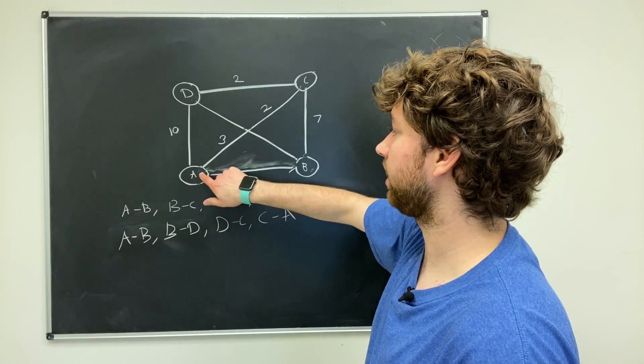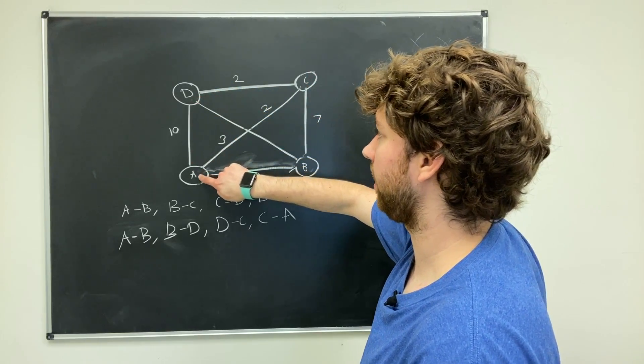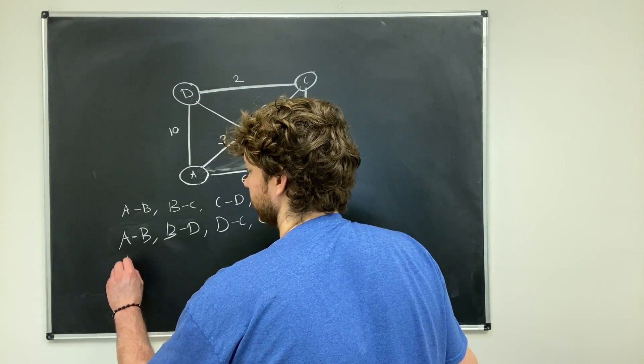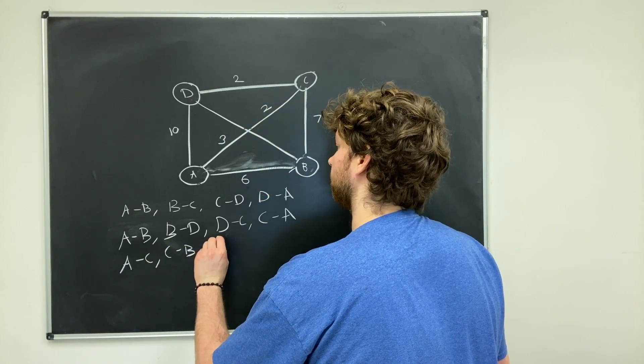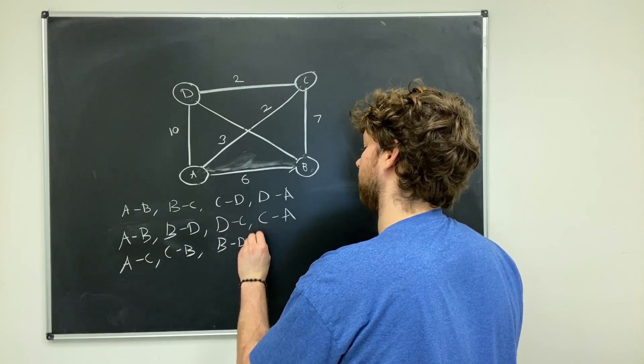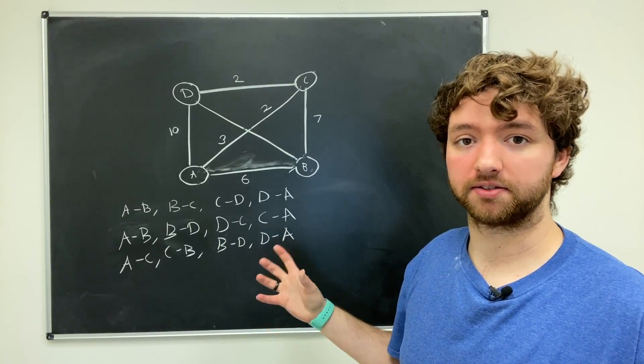A third path would be starting at A, going to C to B to D to A. So I'll write that out. A to C, C to B, B to D, and then D to A.